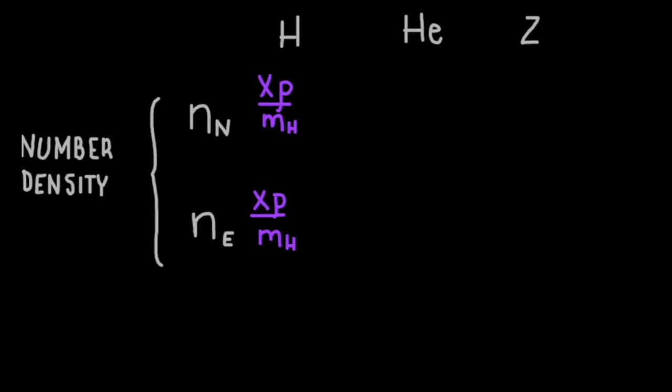The number density of helium is y times density over the mass of helium, which we can rewrite as y times density over 4 times the mass of hydrogen, since the mass of helium is about 4 hydrogen masses.